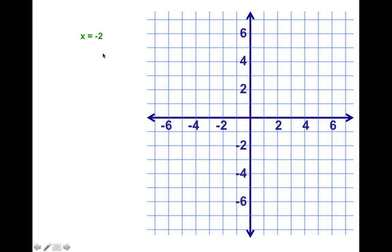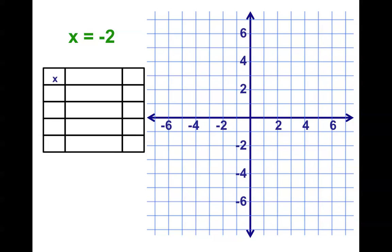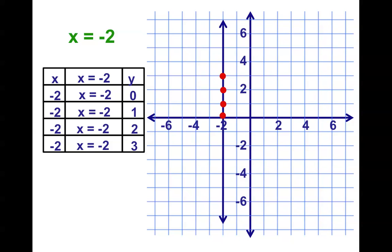So what would happen if I'm picking x's and x is always negative 2? Well, watch. I pick y. y is 0. Guess what? x equals negative 2. When y is 1, guess what? x equals negative 2. Doing the exact same thing, just from right to left instead of from left to right. And check out what happens when I put these points in. The line goes straight up and down. So the equation does make a straight line.